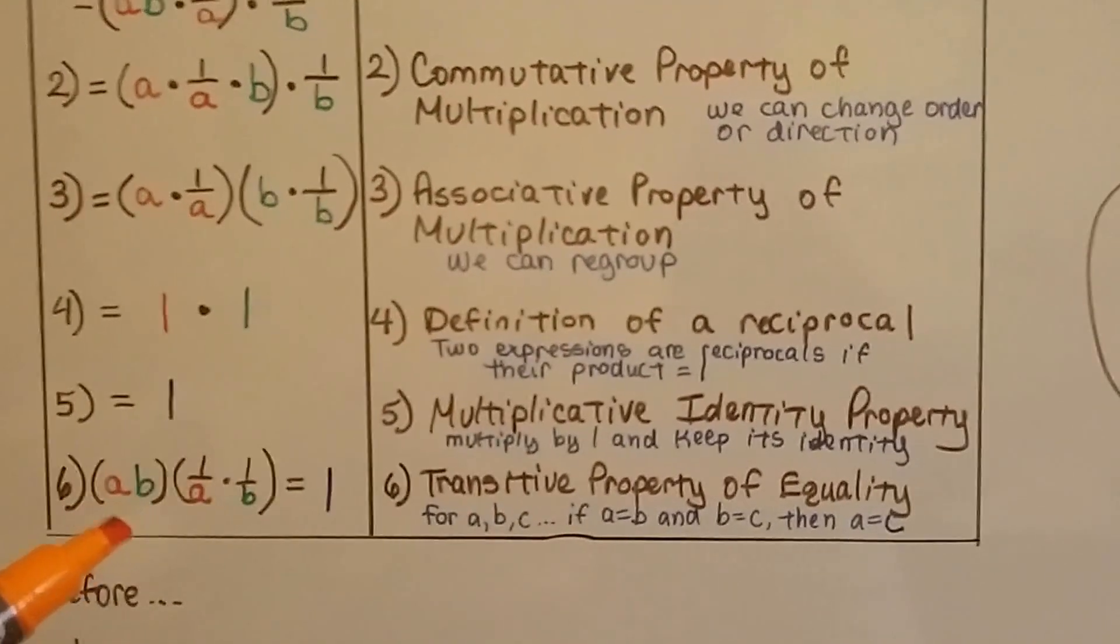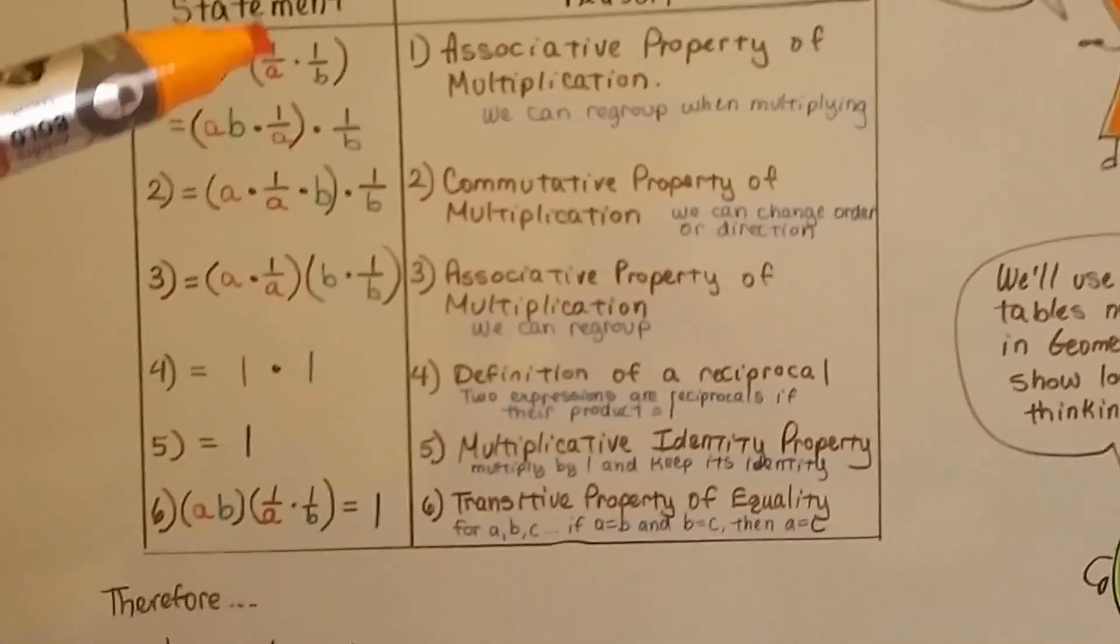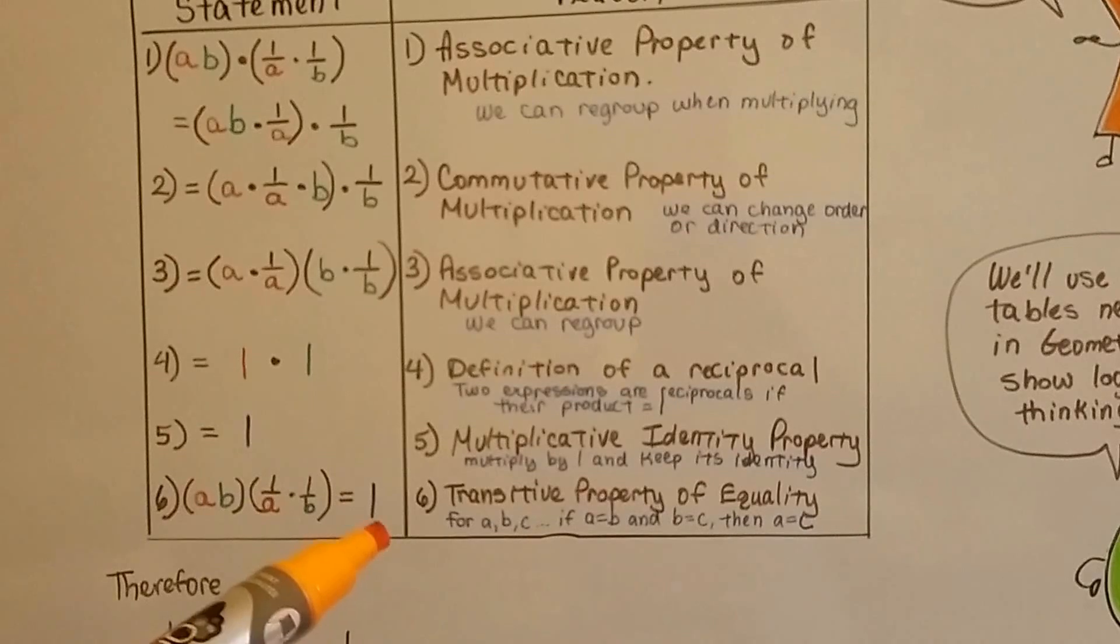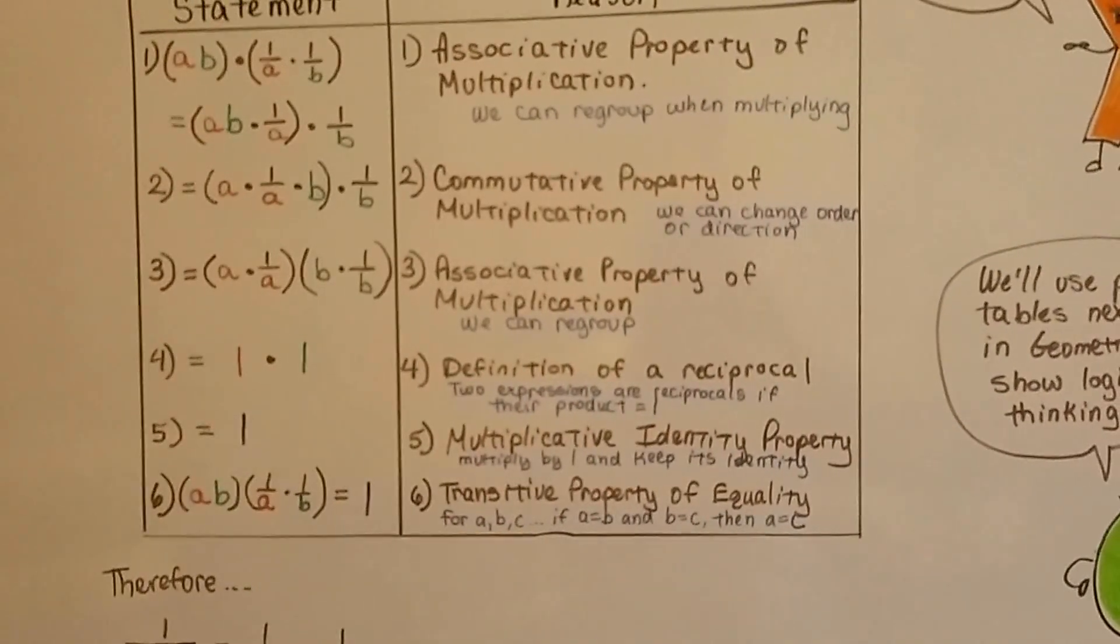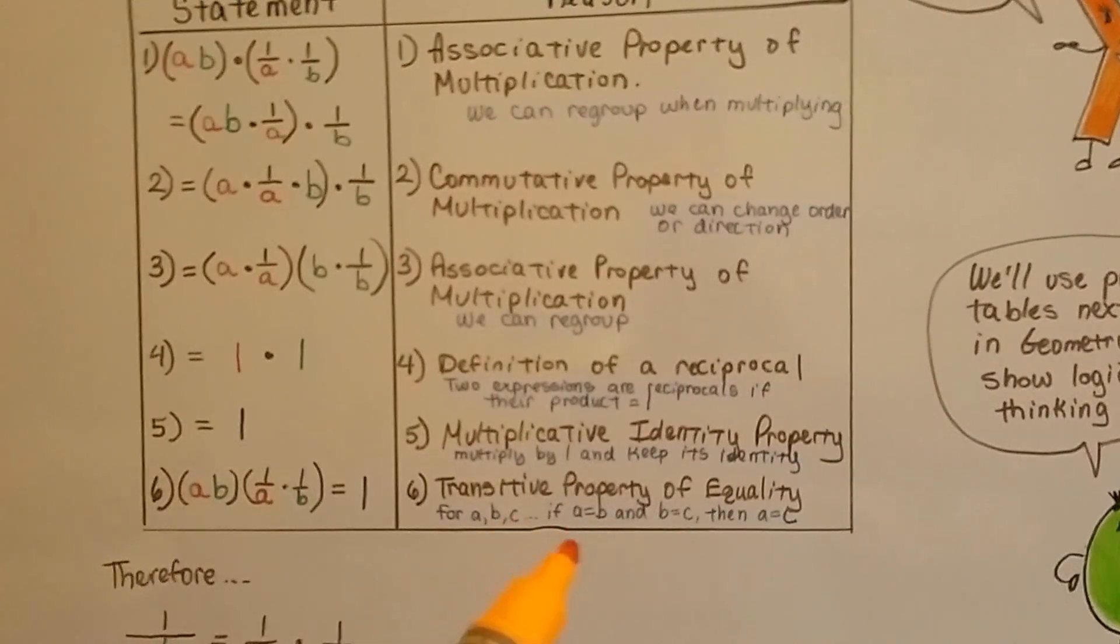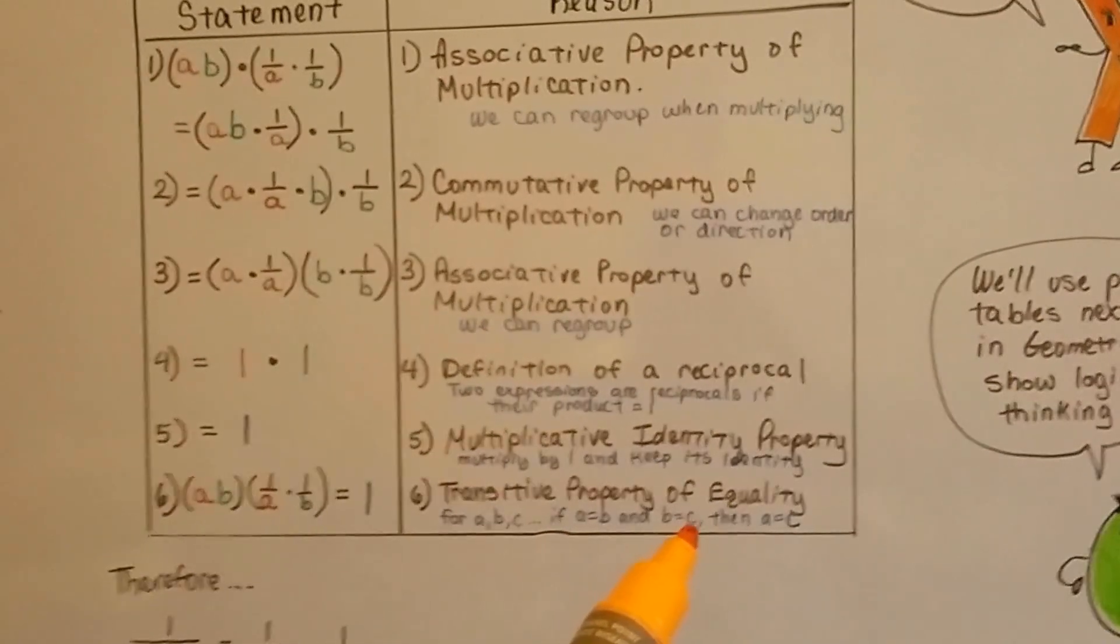Now we can make the statement that a times b, our original one, times 1 over a times 1 over b is equal to 1 because of the transitive property of equality. That says if we have a, b, and c, and a and b are equal to each other, but b is equal to a third one, c...